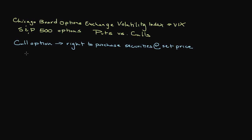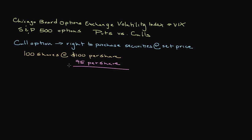Let's say that you purchase a call option to purchase 100 shares of XYZ Company at $100 per share over the next seven days. XYZ Company is currently trading at $95 per share. If you exercised your call option now, you would be purchasing shares of XYZ Company for $100 a piece while their market value is $95 a piece, essentially losing $5 per share or $500 total. So unless its share price increases over $100, there is no reason to exercise your call option.